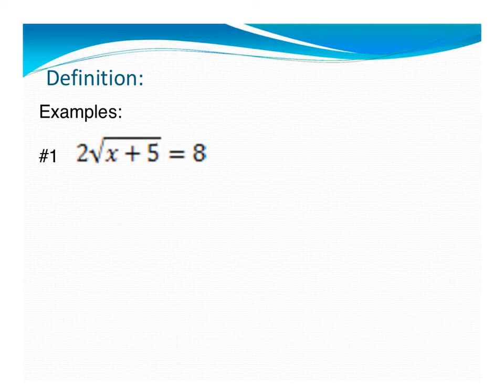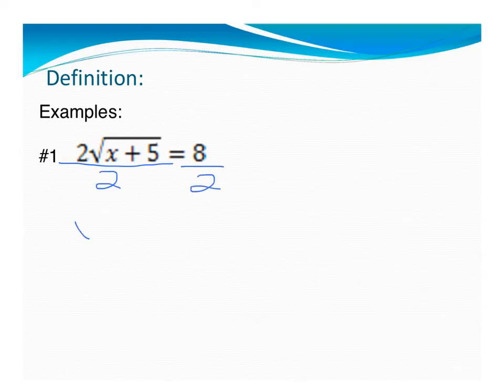Alrighty, first things first here. Now, we do want to get rid of this radical, but not so fast. Hold your horses. I want to get the radical by itself first. So I'm going to divide by 2, and I'm going to have the square root of x plus 5 equals 4.